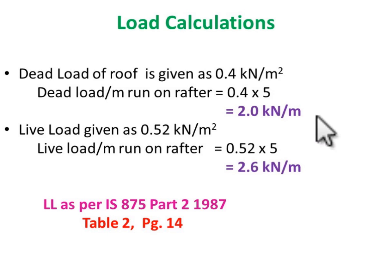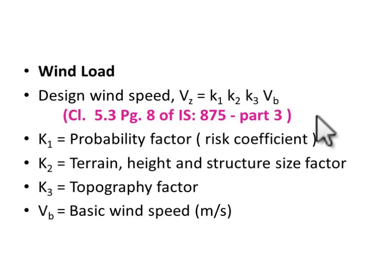The live load is calculated as per IS 875 Part 2. To clarify the IS 875 code: Part 1 is for dead load calculations, Part 2 is for live load, Part 3 is for wind load calculations, and Part 4 is for seismic load calculations. Here we are concerned with dead load, live load, and wind load. To calculate wind load, we first find the design wind speed, given by Vz = k1 × k2 × k3 × Vb, where k1, k2, k3 are constants.